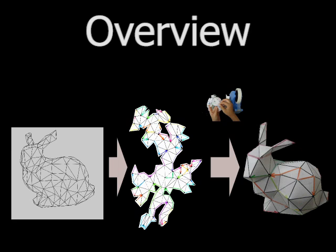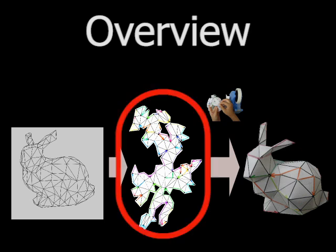This shows the overview of our approach. First, we unfold an input 3D mesh onto the 2D plane. Here, we transform this 3D mesh into a single connected unfolded patch because we would like to avoid searching for the correspondence between the boundary edges of multiple patches.